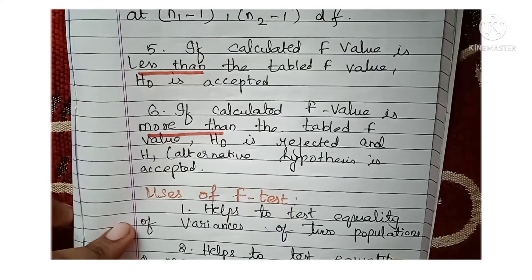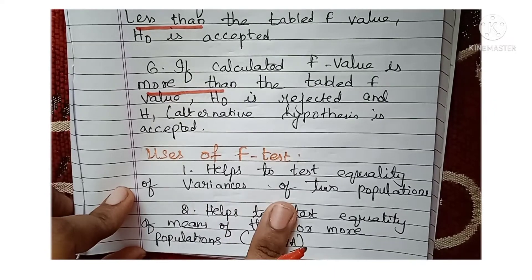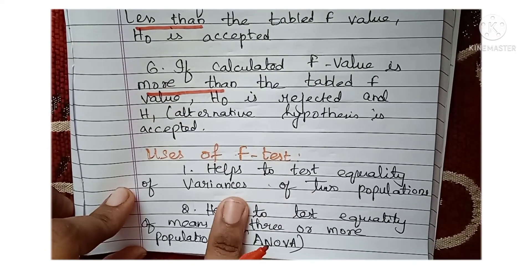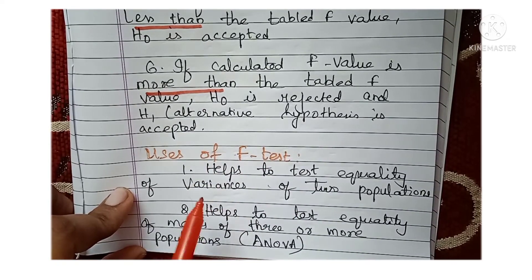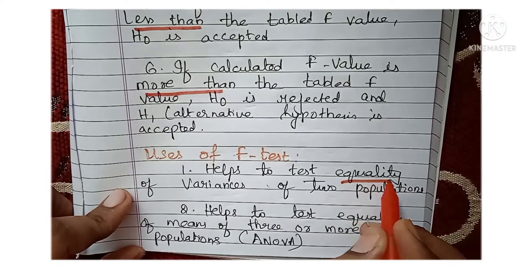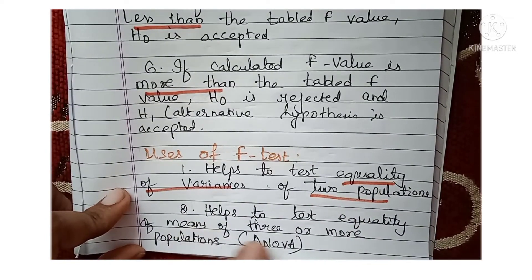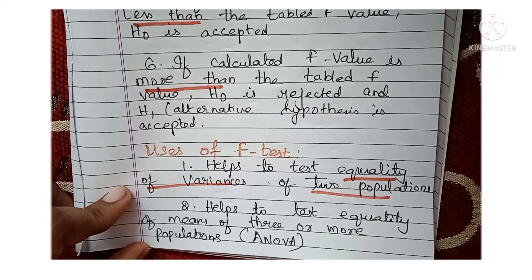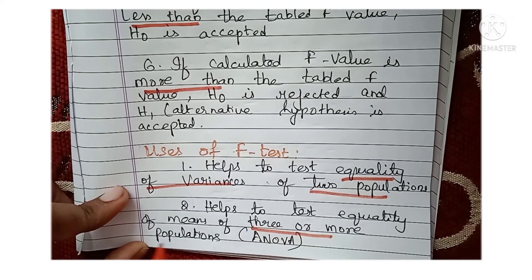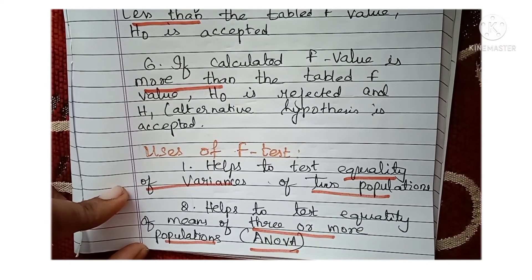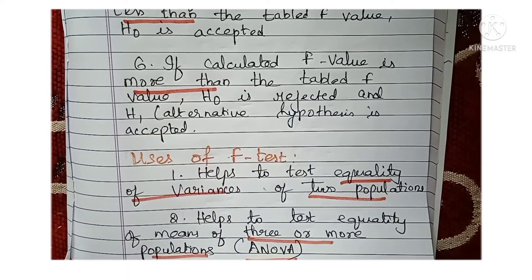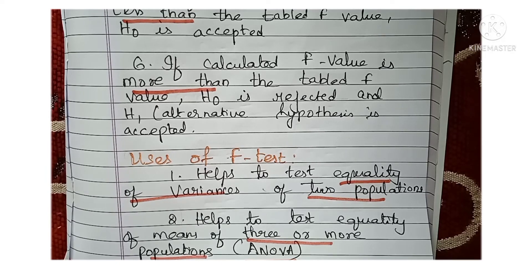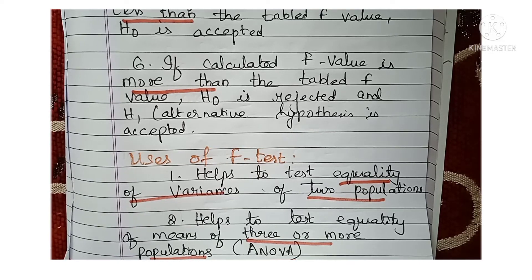Uses of F-Test: It helps to test the equality of variances of two populations — whether the variances of two populations are equal can be tested by means of F-Test. It also helps to test equality of means. However, if there are more than two populations — three or more — then we use a special type of F-Test called ANOVA, which means Analysis of Variance. My next video will be on ANOVA, covering the formula, assumptions, and implications.